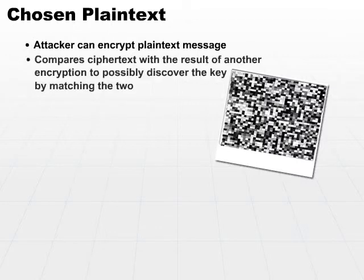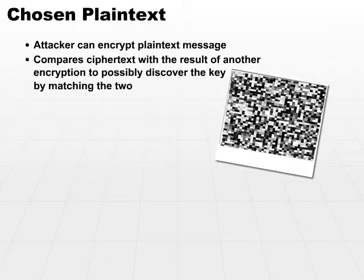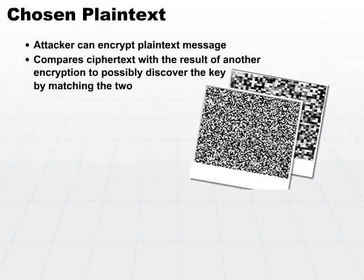He then compares this ciphertext with the result of another encryption to hopefully discover the key by matching the two ciphertexts up. He takes the ciphertext that he created plus the ciphertext of a previous encryption, and if they match, he knows that he can find the key. Or, if they don't match, he might be able to find patterns that will give him clues as to what the key would actually be.